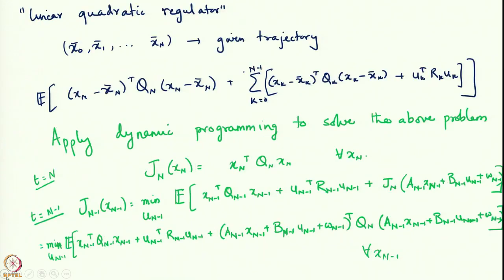Let us take a step back and think about what we have done. We started with the terminal condition: J_n equals the terminal cost. We then applied the dynamic programming equation at time t = n-1 to find J_{n-1} of x_{n-1}. J_n was assumed to be convex and quadratic, and from there we got that J_{n-1} is also convex and quadratic.